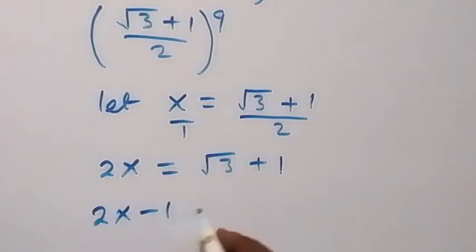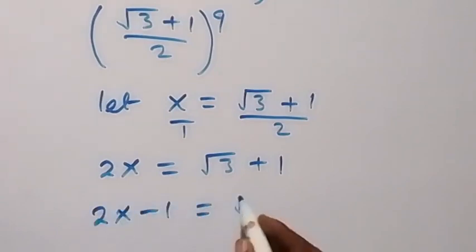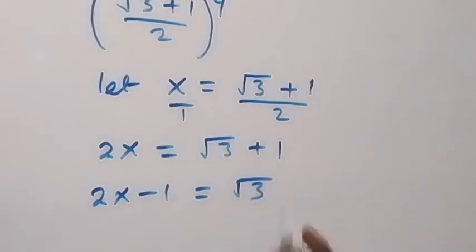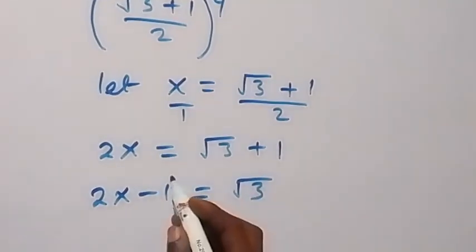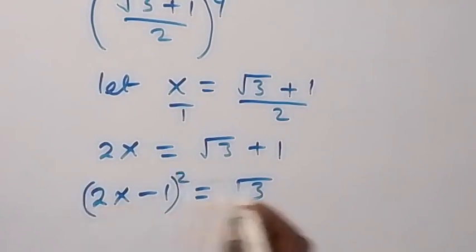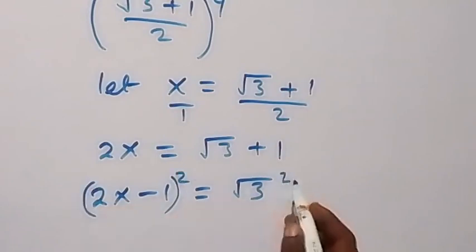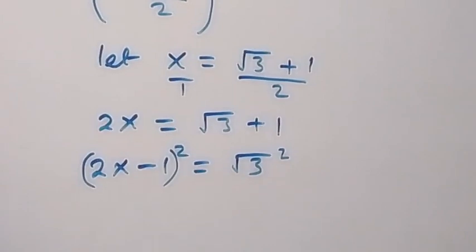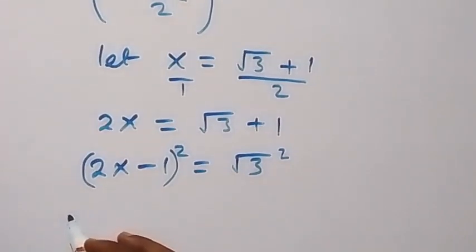We can take 1 to the other side, and this becomes 2x minus 1 equals root 3. When we square both sides to remove the square root, we square both sides.